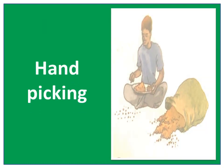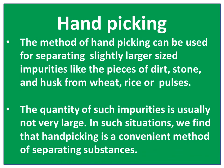Handpicking. The method of handpicking can be used for separating slightly larger sized impurities like pieces of dirt, stone, and ash from wheat, rice, or pulses. The quantity of such impurities is usually not very large. In such situations, handpicking is a convenient method for separating substances.